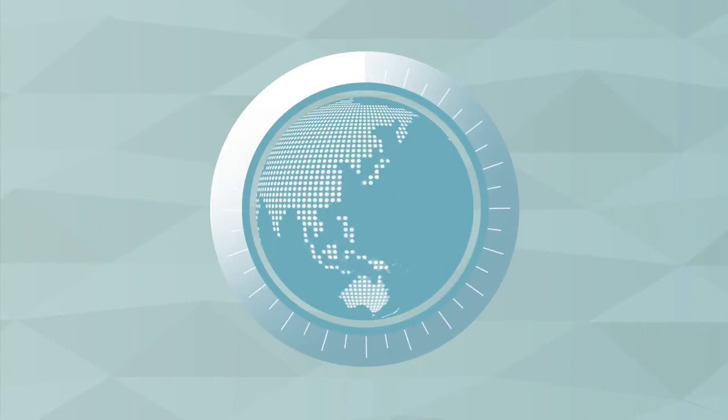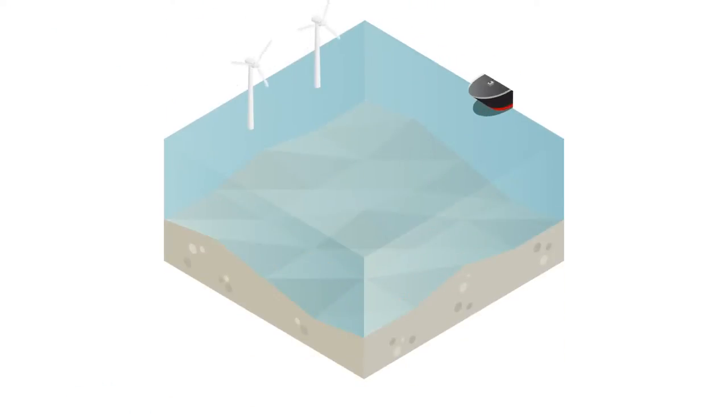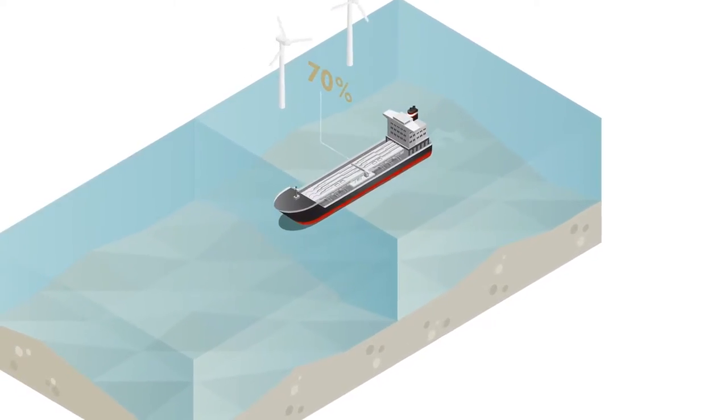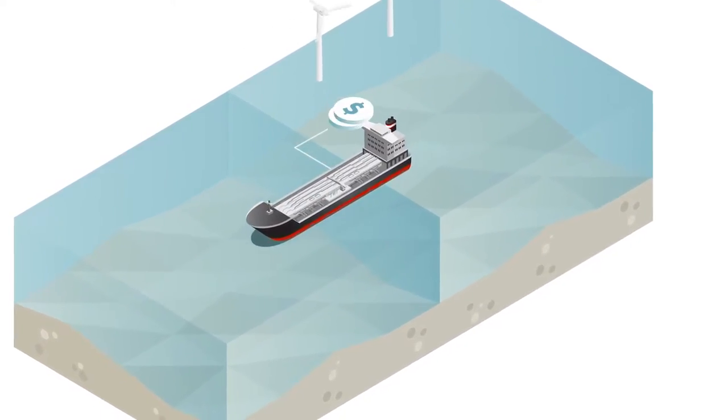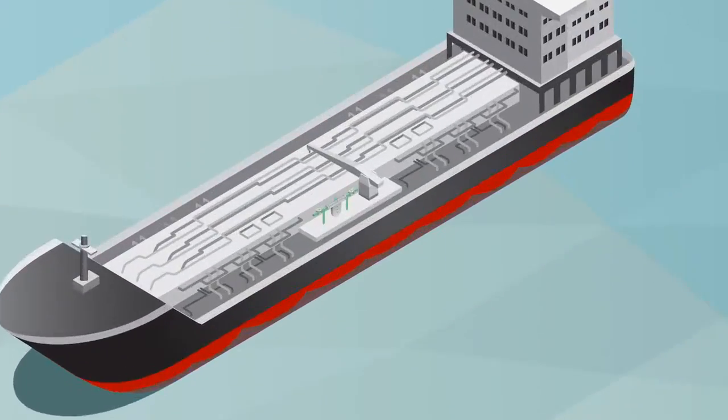The illegal practice of short fuel deliveries is a considerable problem. Vessels are invoiced for more fuel than has been delivered, and given that fuel costs can constitute between 50-70% of a ship's total operating costs, even small differences in fuel quantity become large extra costs for ship owners and operators.